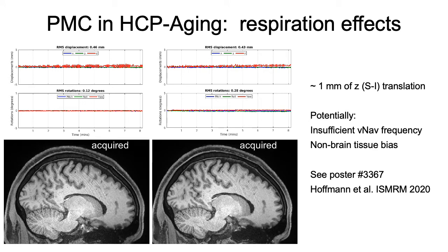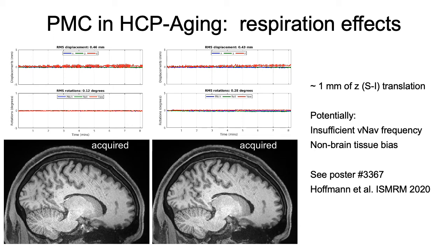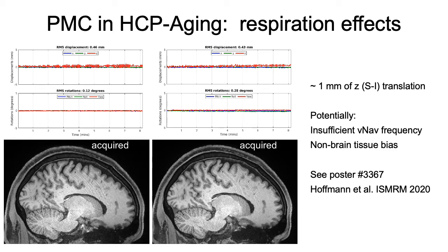These examples show how particular types of respiration can lead to artifacts in VNAV-corrected images. The VNAV motion measurement frequency could be too low, or there could be bias from non-brain tissue. Malta Hoffman has been working on brain-specific registration, which is expected to help with this effect — see more details in poster 3367.